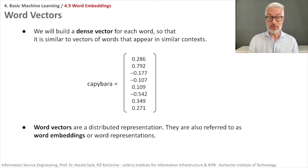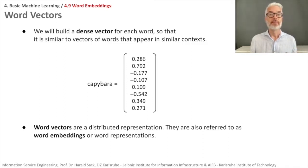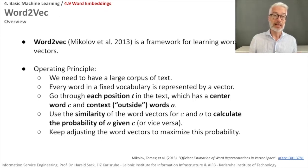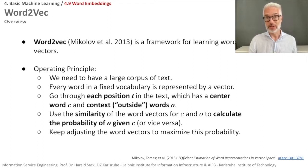These word vectors are also referred to as word embeddings or word representations. We are now showing in principle how to create these kind of vectors. The most famous and one of the first algorithms that produces these dense word vectors was word2vec. Word2vec is a framework for learning word vectors, introduced in 2013 by Mikolov. We are not going to talk about latent semantic analysis, but we focus on word2vec here.